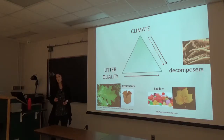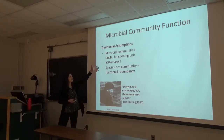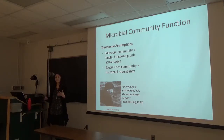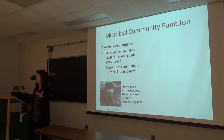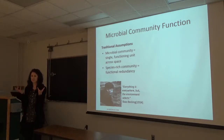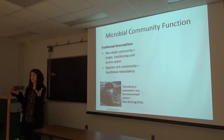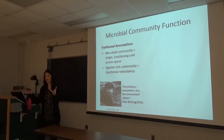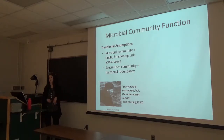Traditionally, we assume these communities are single-function units across space because they're extremely species rich. If we step outside and pick up a handful of soil, there are hundreds of thousands of different microbes in it. And in another handful from Ames, Iowa, there'll be another hundreds of thousands of different microbes. Because of this incredibly species-rich diversity, the assumption is that someone—even if not the same species—within both communities can perform the same task at the same rate, leading to this idea of functional redundancy.